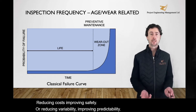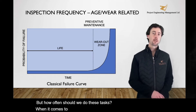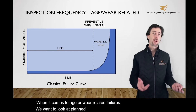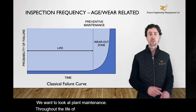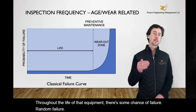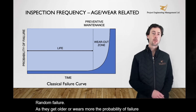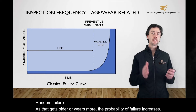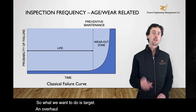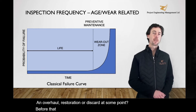But how often should we do these tasks? When it comes to age or wear-related failures, we want to look at planned maintenance throughout the life of that equipment. There's some chance of random failure, but as the equipment gets older or wears more, the probability of failure increases. So what we want to do is target an overhaul, restoration, or discard at some point before that increased probability gets too high.